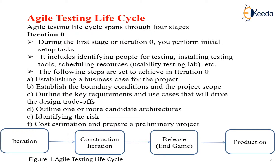What are the steps to achieve in Iteration 0? The first is establishing a business case for the project - identifying what the needs are. Then boundary conditions and the project scope: what are the boundaries, what are the limitations, and what the project can do, how and when. Then outline the main or vital requirements and use cases that will drive the design. Outline one or more candidate architectures, and identify the risk factors.